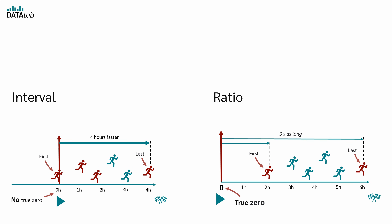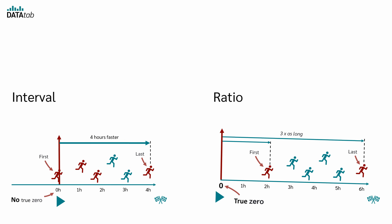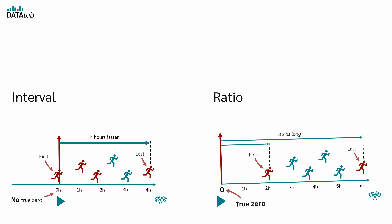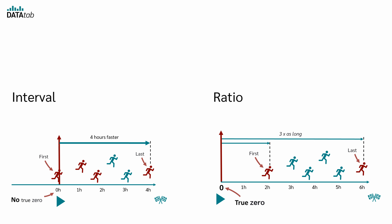In summary, while both interval and ratio scales have equal intervals and support similar operations like addition and subtraction, ratio scales have a true zero point where zero represents the absence of the quantity being measured. This allows meaningful multiplication and division.